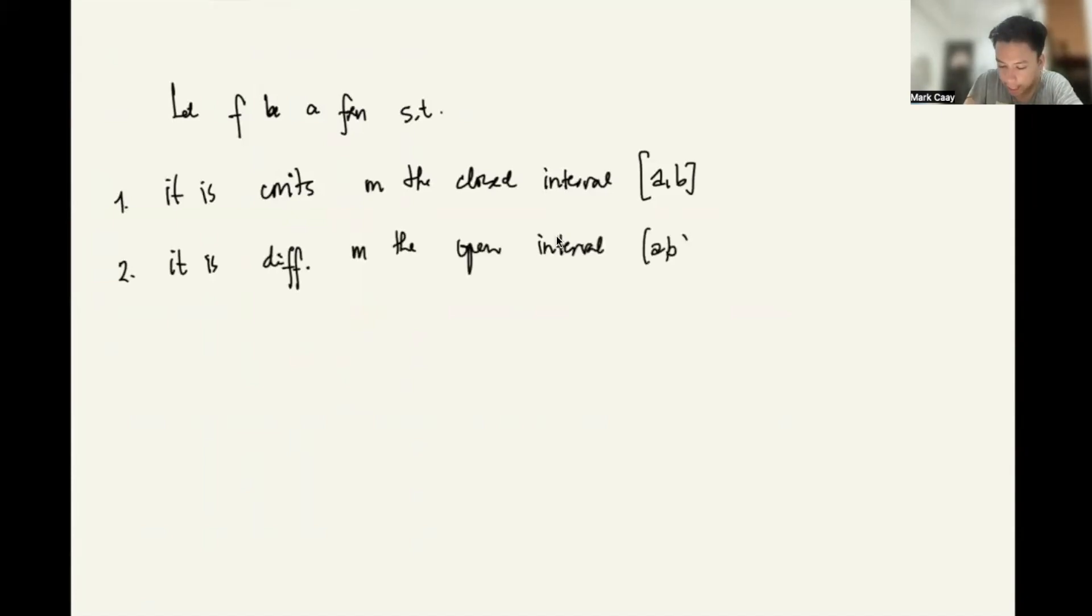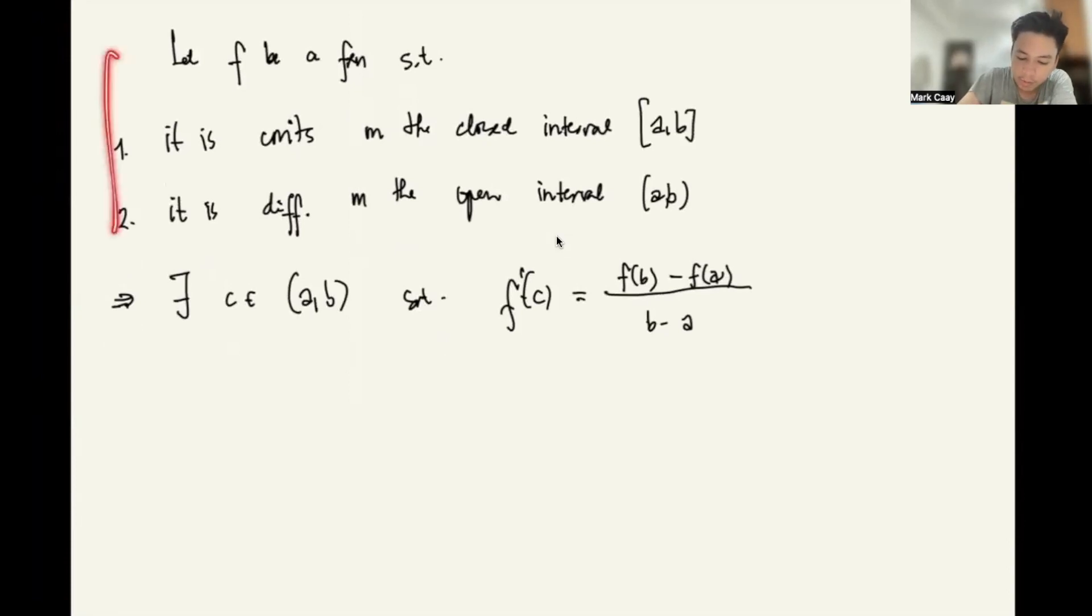So how do we introduce our discussion for today? Suppose we're given the conditions: let f be a function such that number one, it is continuous on the closed interval [a,b]. Number two, it is differentiable on the open interval (a,b). So the conclusion here is there exists a number c in the open interval (a,b) such that f'(c) equals f(b) minus f(a) all over b minus a. So what does this message imply if you are given with a condition that this one holds?